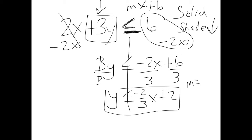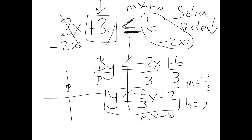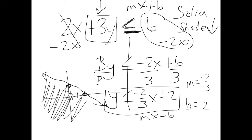If graphing by hand, the slope is -2/3 and b is 2. You go up 2 units for your first dot, then a slope of -2 over 3 means go down 2, over 3 — so your next dot is there. This is a solid line and we shade down. You could also type this into your calculator to see what it looks like. For solutions: a dot on the line is okay when it's a solid line, but anything in the non-shaded area is not a solution.